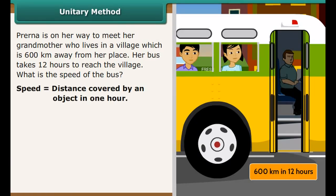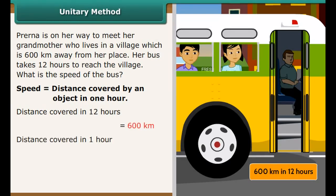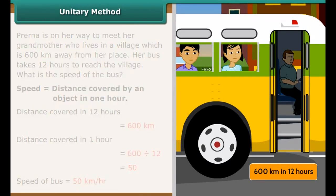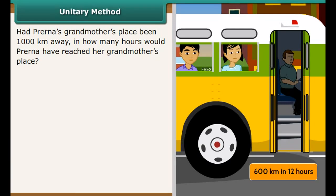Had Prerna's grandmother's place been 1000 km away, in how many hours would Prerna have reached? Time taken to cover 600 km is 12 hours. Time taken to cover 1 km is 12 divided by 600 hours. Time taken to cover 1000 km is 12 upon 600 into 1000, which equals 20 hours.